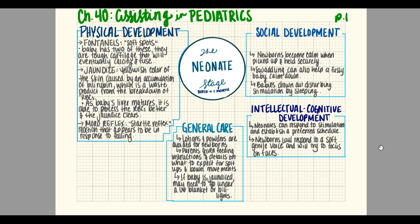Newborns will respond to a soft, gentle voice and will try to focus on faces. For general care, lotions and powders are avoided for newborns. Parents are given feeding instructions and details on what to expect for spit-ups and bowel movements. You generally learn that babies are gross — they poop, baby boys may hose you down, and they can projectile spit up sometimes. Everyone is sleep deprived. If the baby is jaundiced, they may need to go under a UV blanket or the billy lights to help clear the jaundice.